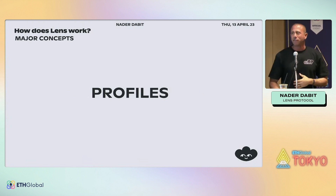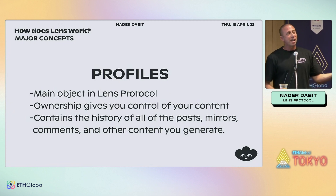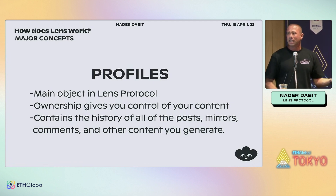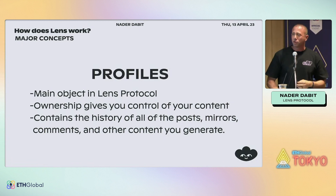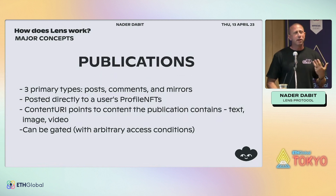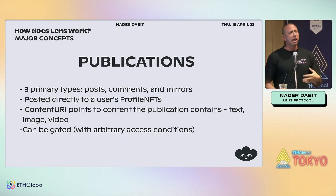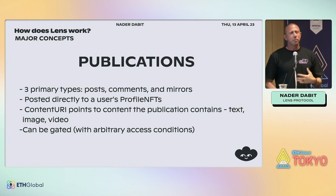Let me run through the major concepts. A profile is the main object in Lens — when you sign up, everything you do afterwards gets attached to it: publications, comments, everything. The profile is transferable because it's essentially an NFT, so you can move it to another wallet, burn it, or sell it. Publications are how you create content — three main types: posts, comments, and mirrors. A mirror is like a retweet. The content URI points to a decentralized storage protocol like Arweave or IPFS, and you can even add gated conditions to publications.